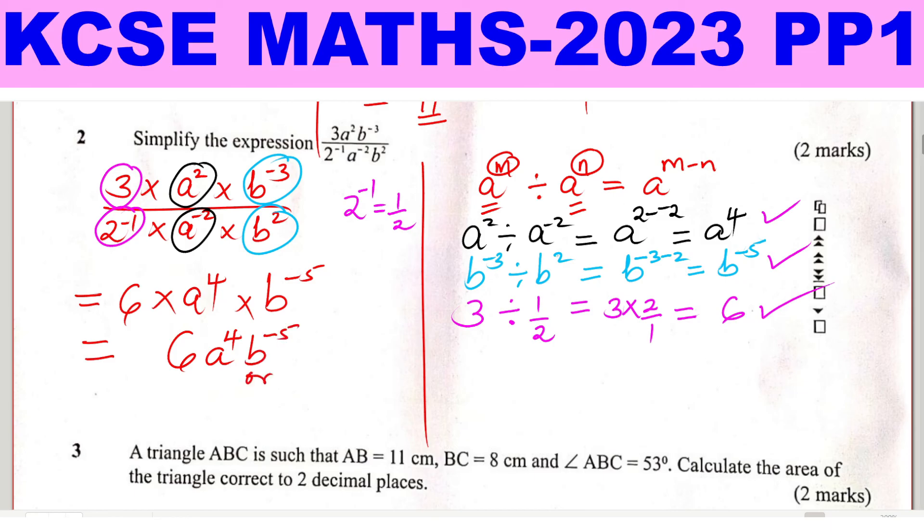Or you can write it like this, 6a raised for 4 divided by b raised for 5. Since b raised for negative 5 is the same as 1 over b raised for 5. So that is how you're supposed to solve that question. So these are the solutions.